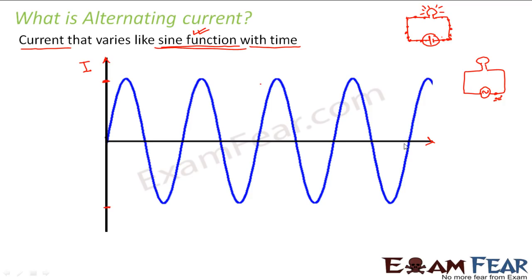Another important parameter when talking about alternating current is the frequency — that is, how frequently the electron changes its direction. For example, one electron goes clockwise, then anti-clockwise, then back again. How fast the electron changes its direction is defined by the frequency. If the frequency is 20 Hz, the electron is moving back and forth 20 times per second. Along the x-axis we take omega t, where omega is the angular frequency.